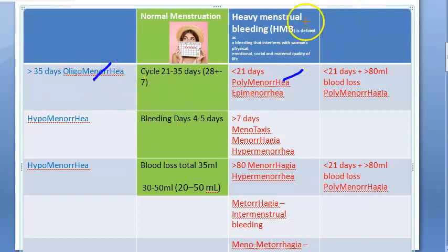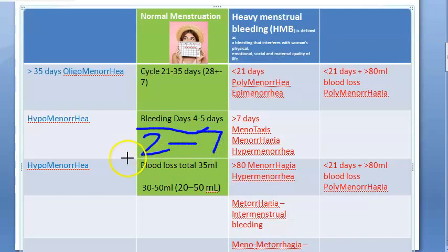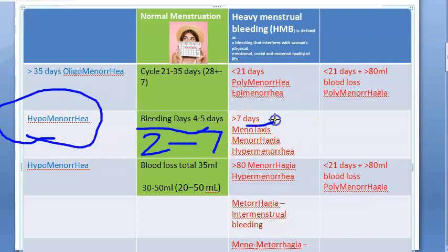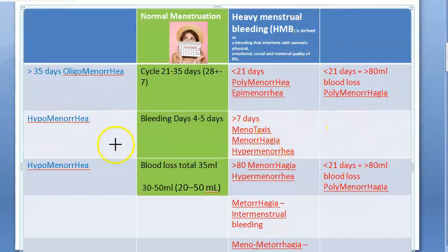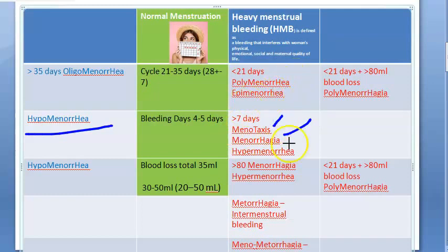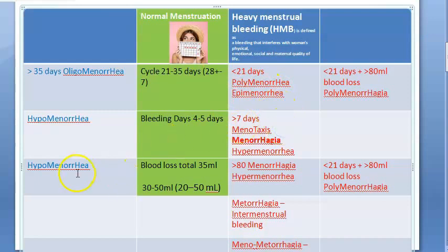Now looking at bleeding days: if she has very few bleeding days, that is scanty bleeding — called hypomenorrhea. If bleeding is greater than 7 days, that is menorrhagia. Prolonged bleeding is also called menotaxis, but menorrhagia is the more commonly used terminology. For total blood loss, scanty blood loss is also called hypomenorrhea.